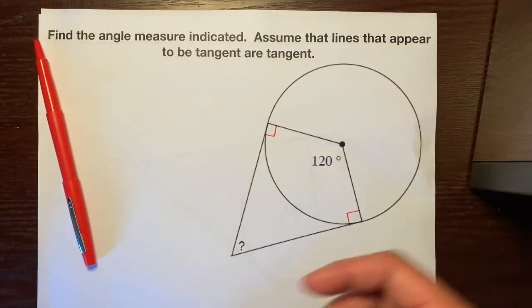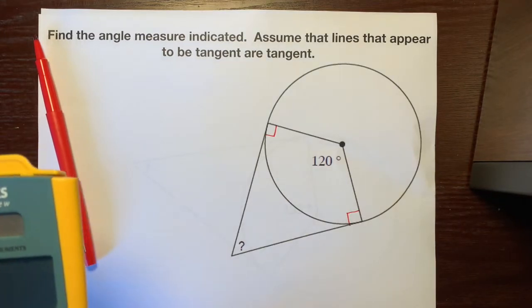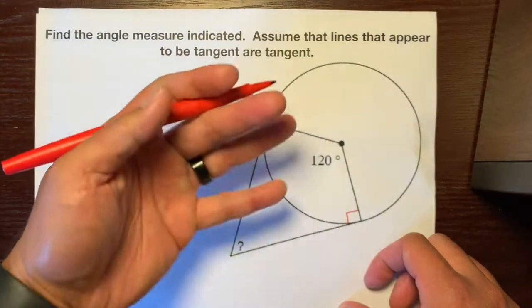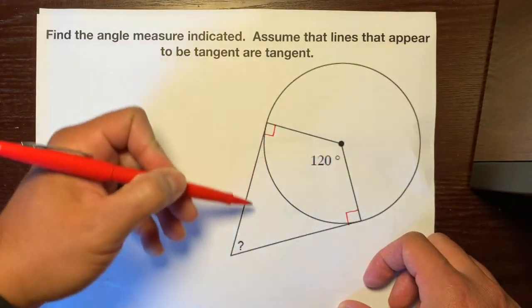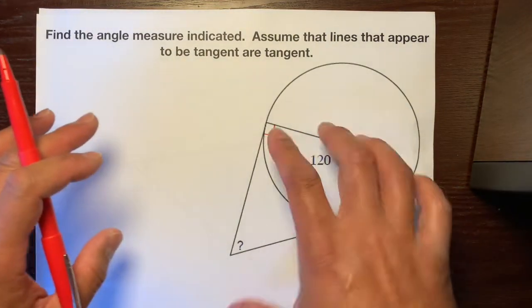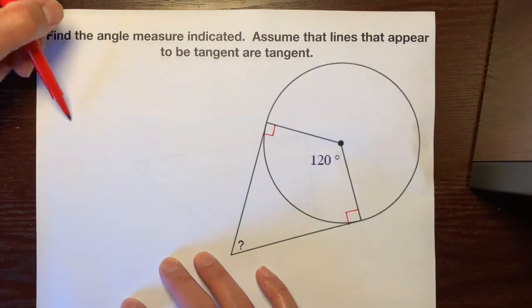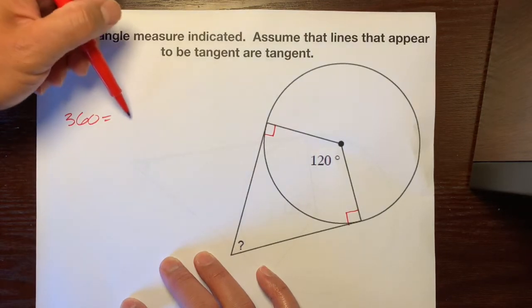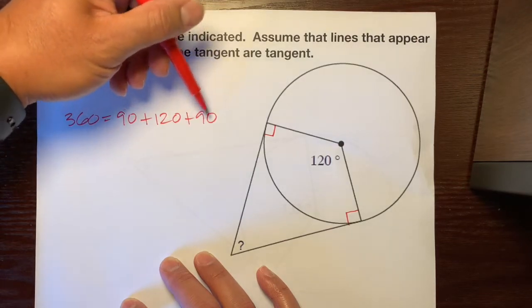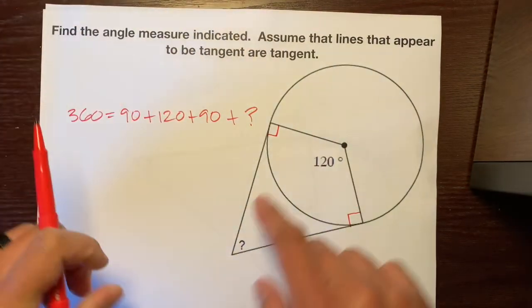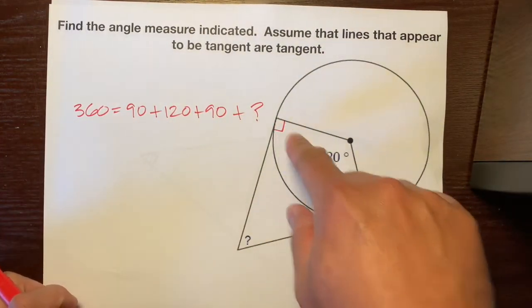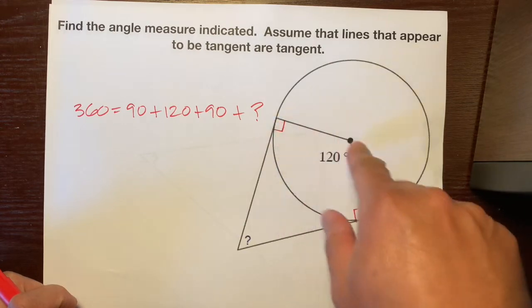And if you guys remember, a quadrilateral is made up of two triangles, so that means that each triangle is 180 degrees. So two triangles or a quadrilateral, all four of its angles add up to 360 degrees. So here's how we set this up: 360 is equal to 90 plus 120 plus 90 plus question mark.